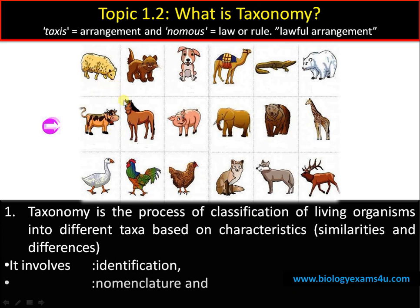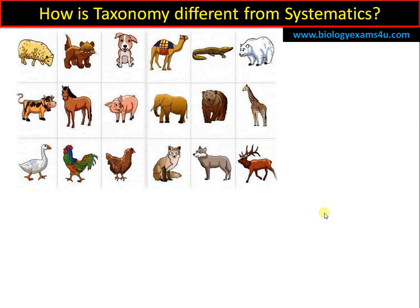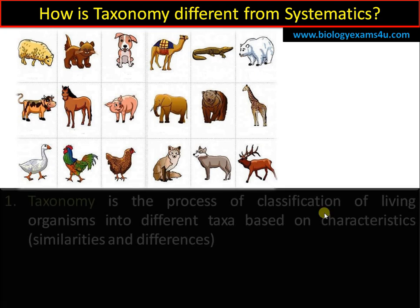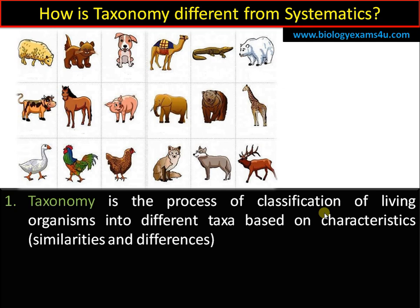Taxonomy is based on similarities and differences between organisms. It involves three steps: first, identification; second, naming — which is the scientific name in science; and third, classifying based on similarities and differences. Taxonomy is the process of classification of organisms into different groups based on characteristics.